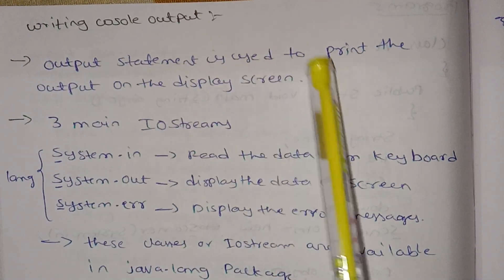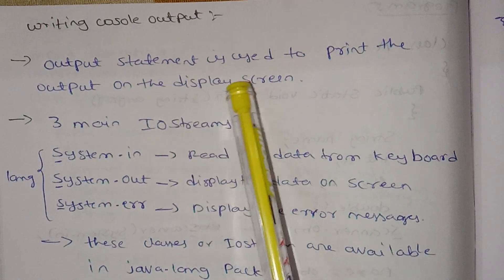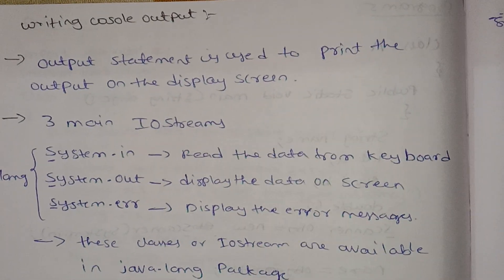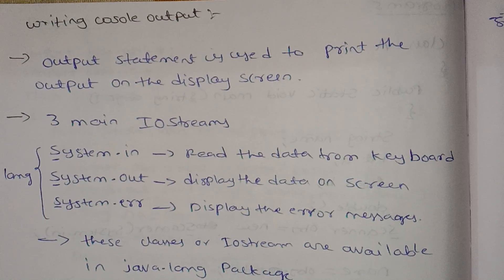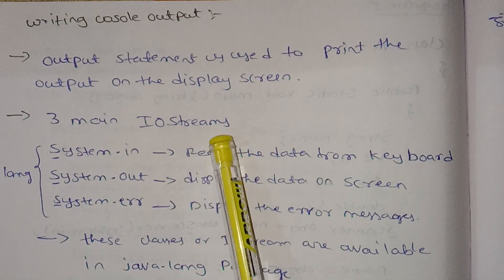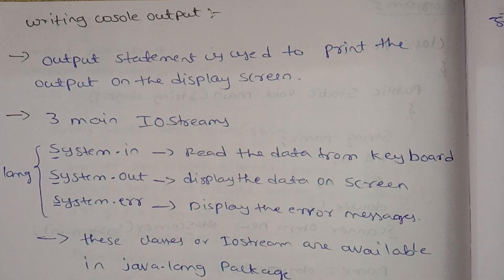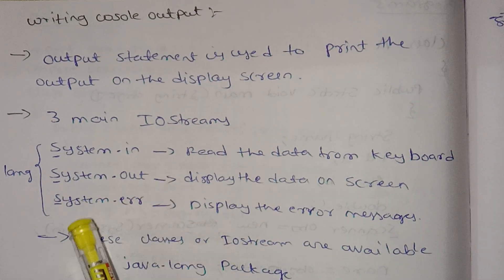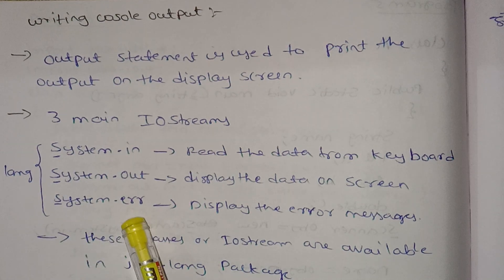The output statement is used to print the output on the display screen. There are three main I/O streams: system.in, system.out, and system.error.